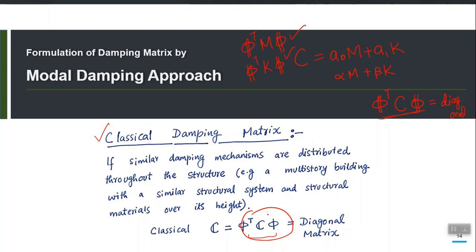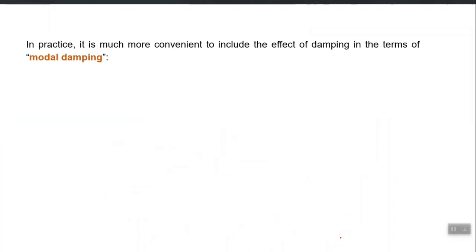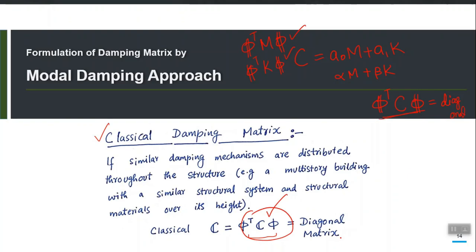The product φᵀCφ should be a diagonal matrix in order for the damping to be classified as the classical damping matrix. There were two approaches discussed in the last lecture for formulation of the damping matrix C. The first approach was the modal damping approach, where we directly define ξᵢ for each significant vibration mode, and then the program uses all those ξᵢ values to construct back the C matrix.